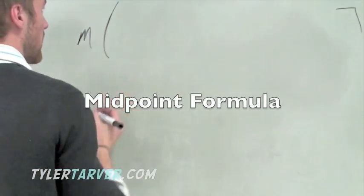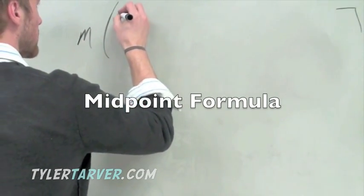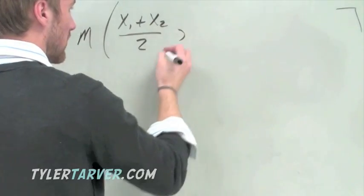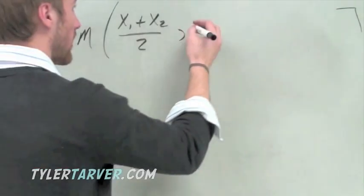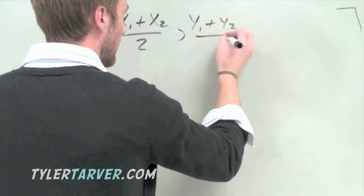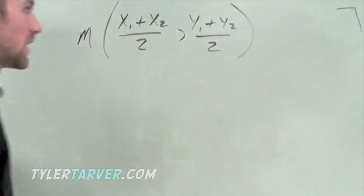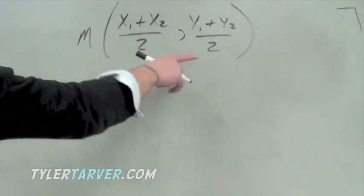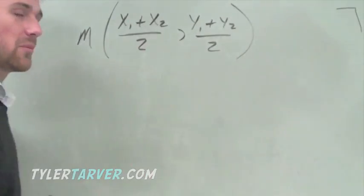So let's write it down. Midpoint is going to be x1 plus x2 divided by 2, that's a 2 not a z, I have crappy handwriting. Then y1 plus y2 divided by 2. That's it. And you're thinking, well that's a crazy looking formula because it's got parentheses around it and it's got a comma in the middle.